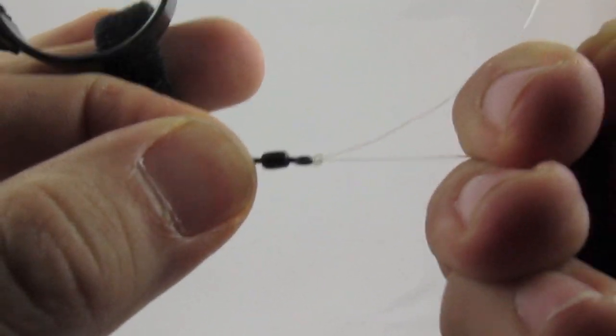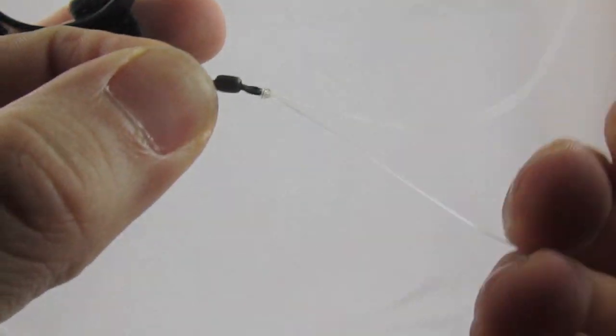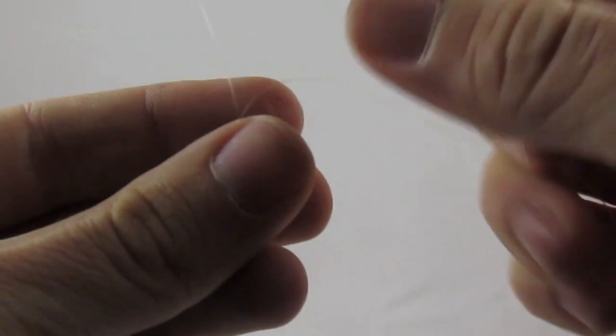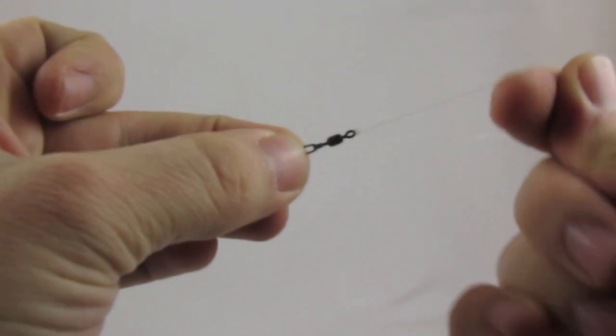And from there, done with the uni tool, the Quick Tie tool. Just cut that little extra off and you have yourself a swivel on the line. Alright, that's it.